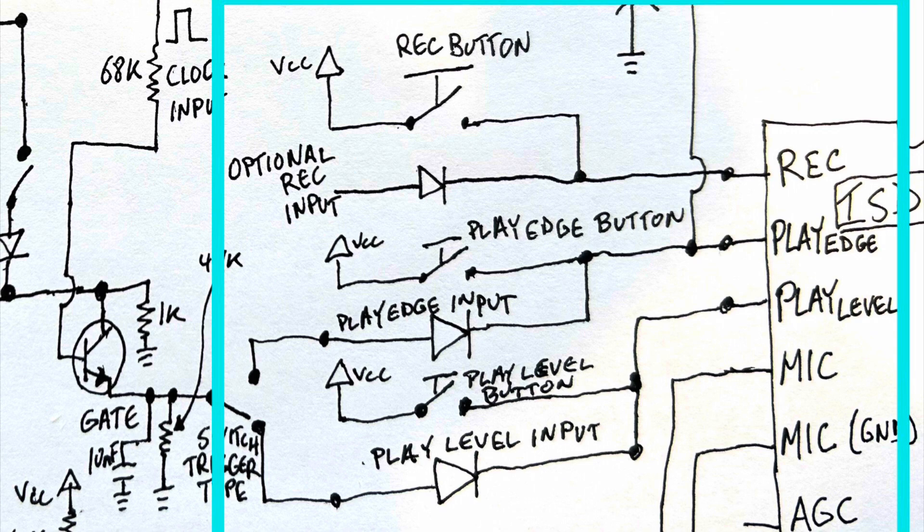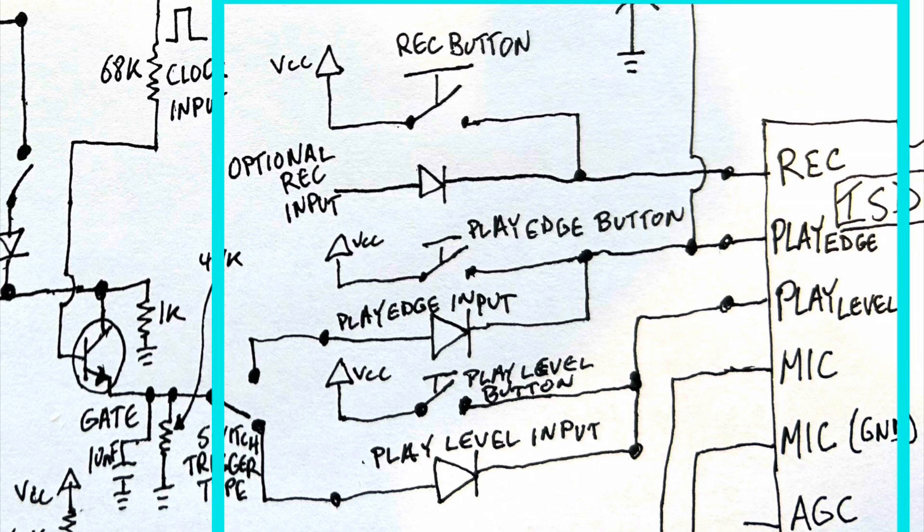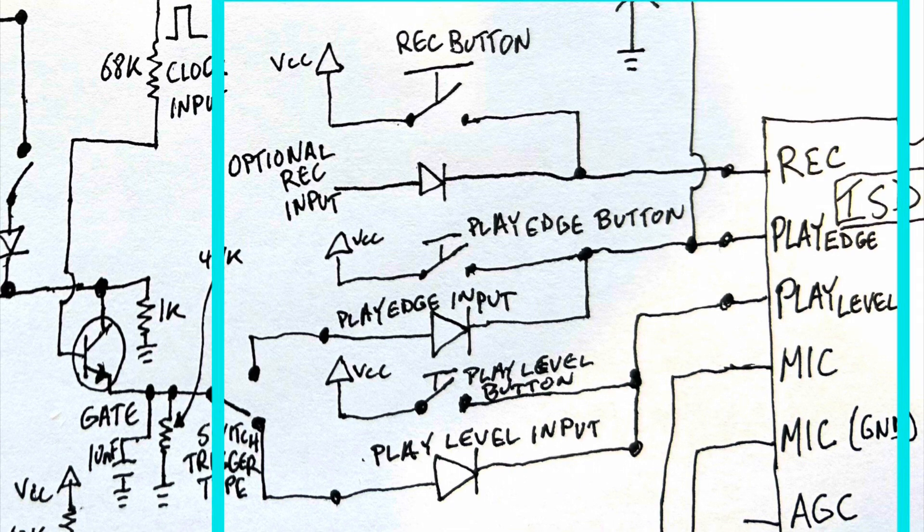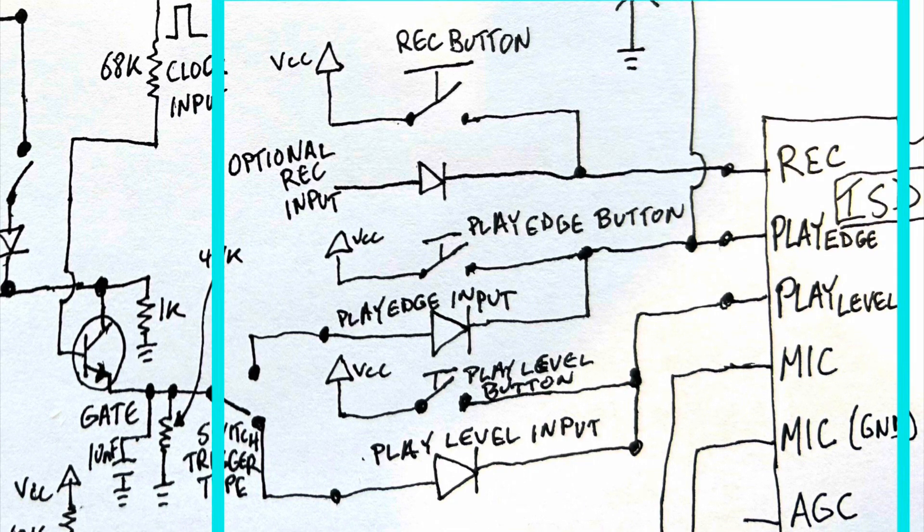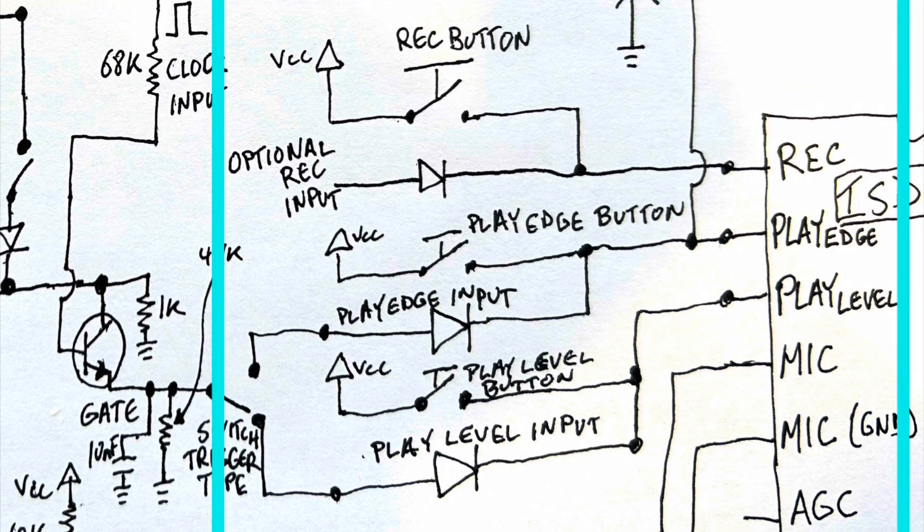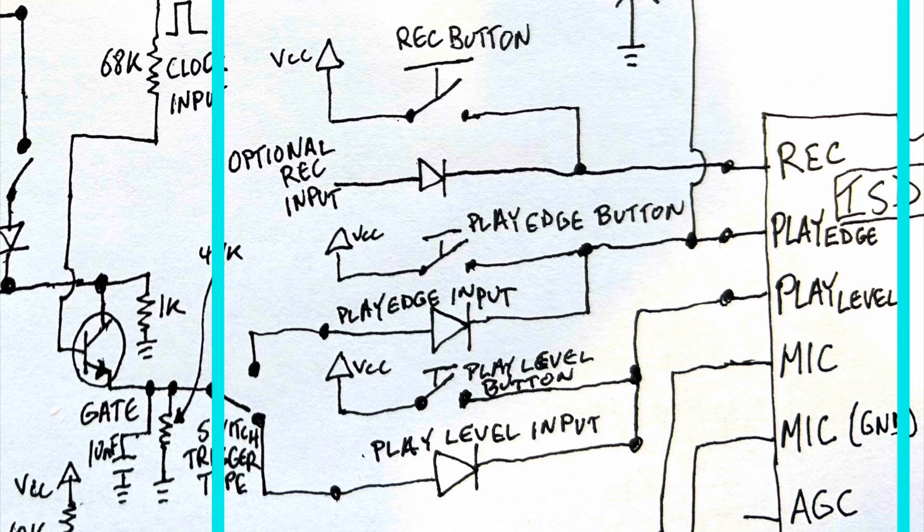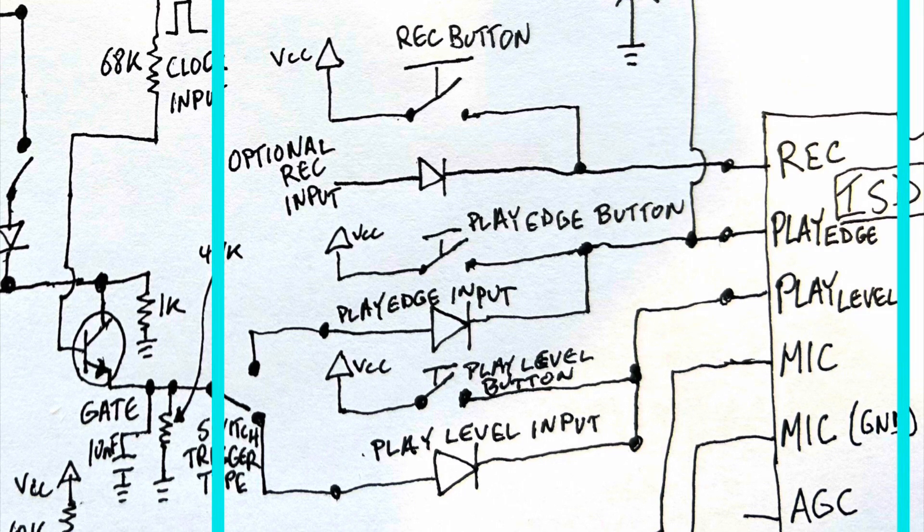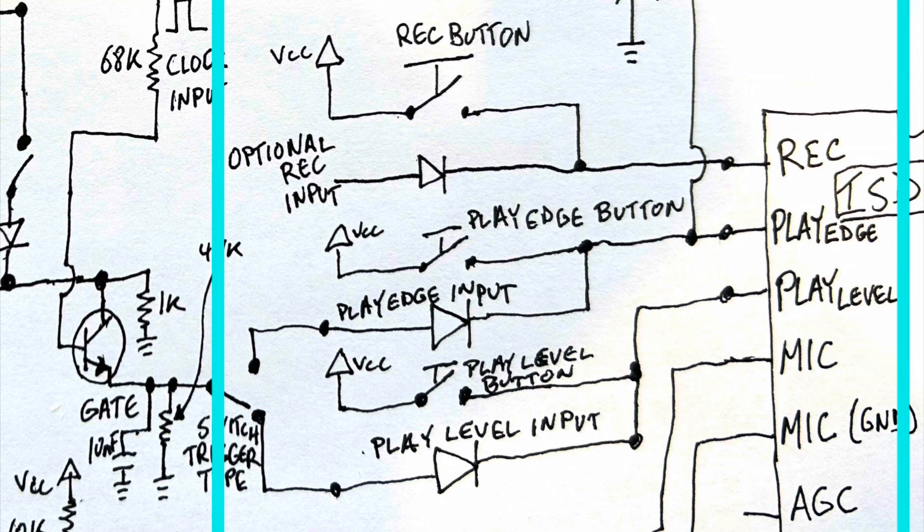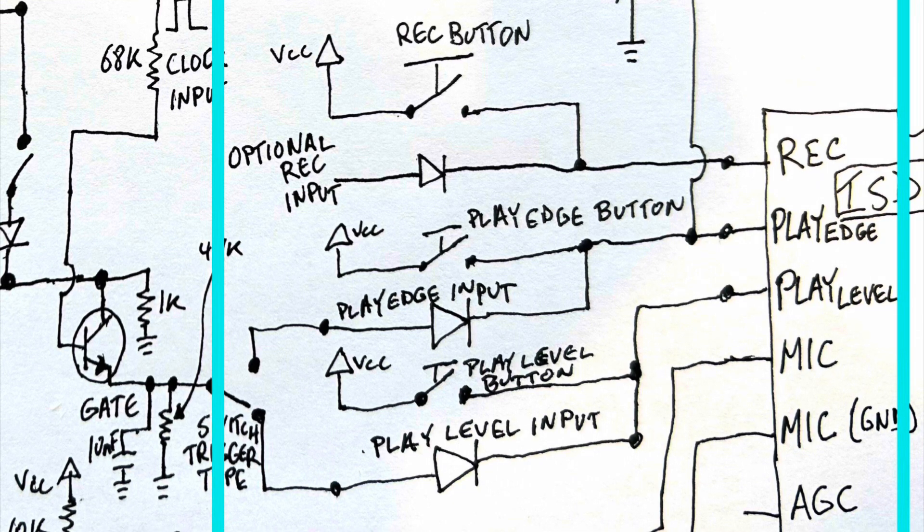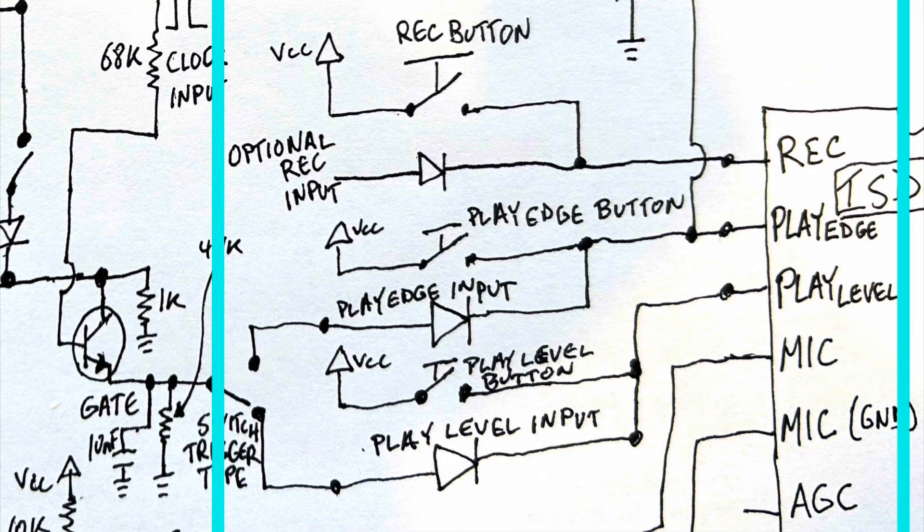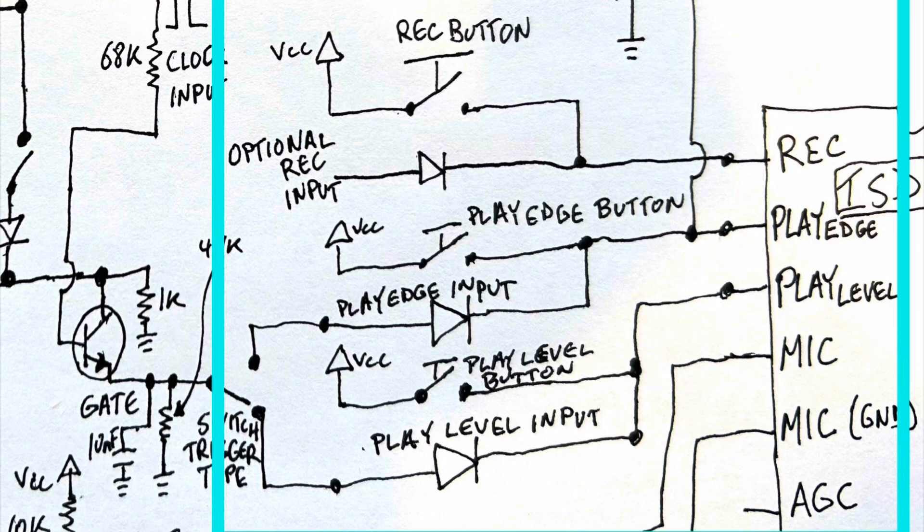So the input controls, record play edge and play level, are controlled in this little circuit. They could be attached to the buttons, buttons already come on the actual module. But I wanted to add buttons that I could put away from the modules, press on it from far away. And these are easier buttons to push. Also, I wanted to add inputs that I can control from a separate circuit, including a sequencer gate signal.